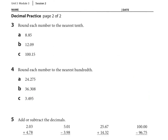Looking at number three: round each number to the nearest tenth. Now we're looking at the tenths place value. We look to the right one — we're going to look at the hundredths place value. We see that it's a five, so that eight is going to become a nine. Our answer is eight and nine-tenths.